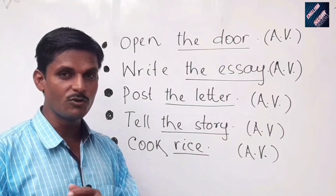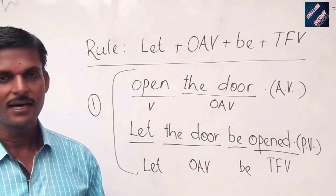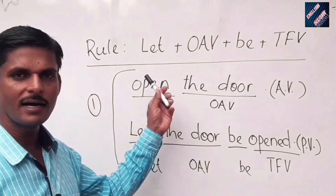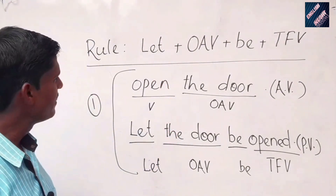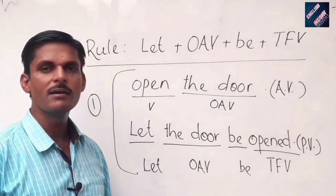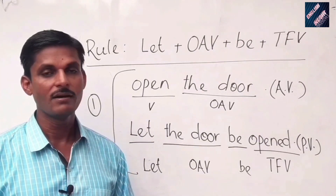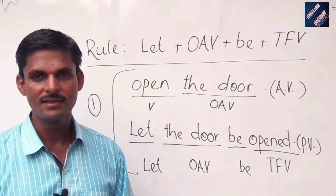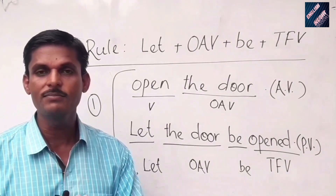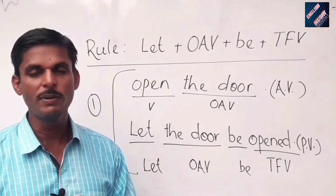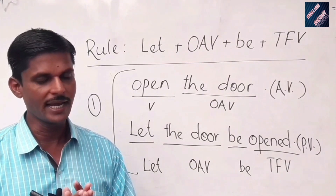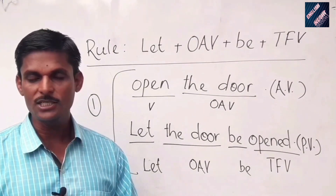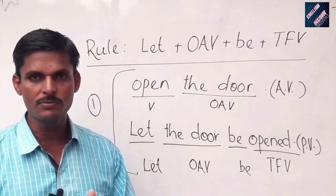How can they be turned into passive voice? There is a very simple rule written on the board: LET + OAV + BE + TFV. First, use 'let' at the beginning of the sentence. Then comes OAV — object of the active voice. Next comes 'be' — the same word must be used. And the last one is TFV — third form of the verb.